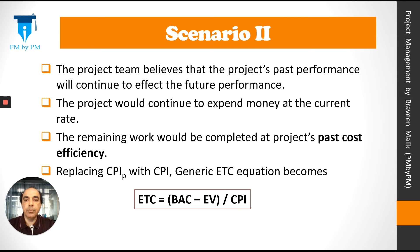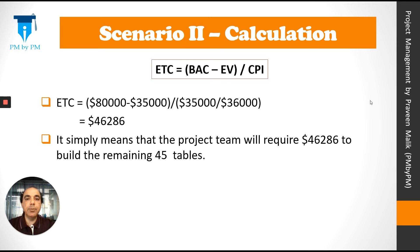Scenario 2: the project team believes the project's past performance will continue to affect future performance — the project will continue to spend money at the current rate. The remaining work would be completed at the project's past cost efficiency. Replacing CPI_P with CPI, the formula becomes ETC equals (BAC minus EV) divided by CPI. For our example project, after calculation, ETC comes out to be $46,286 — meaning the team will require $46,286 to build the remaining 45 tables.